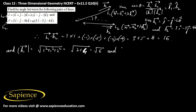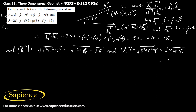And mod of B2 equals square root of 3 squared plus 5 squared plus 4 squared, which is square root of 9 plus 25 plus 16, that is square root of 50, which equals 5 root 2.